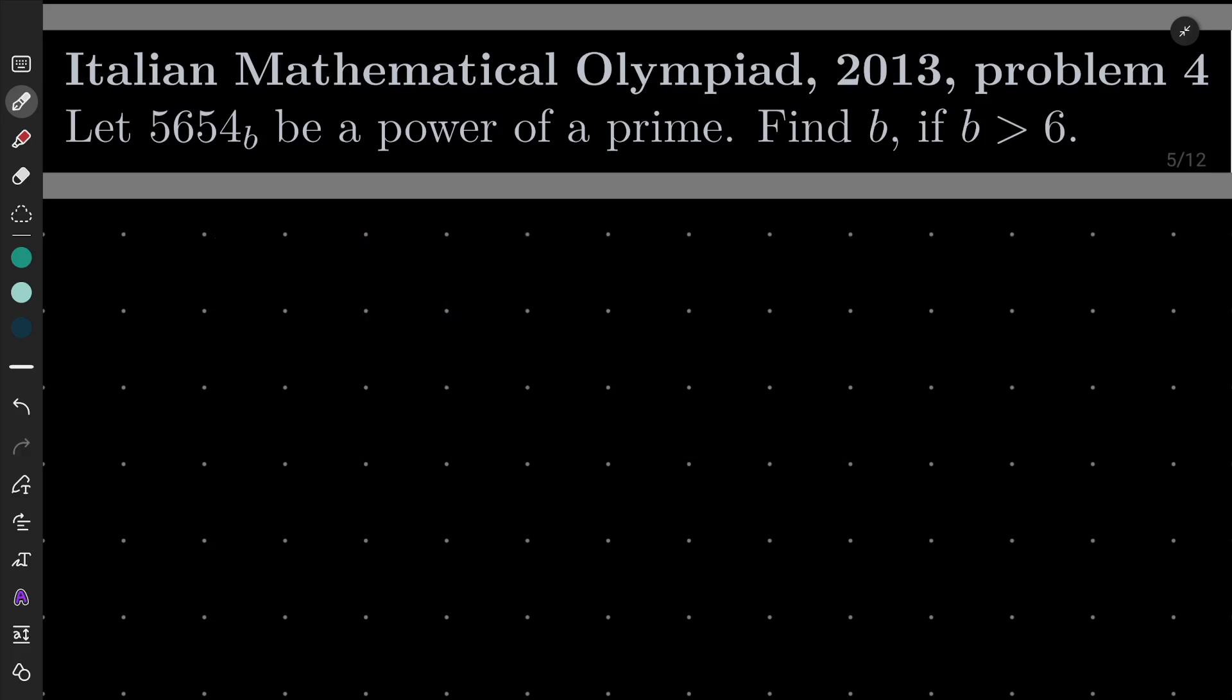My solution to this problem is not that complicated. We take digits from right to left and multiply them by increasing powers of B. Now it's time to factorize this cubic polynomial.